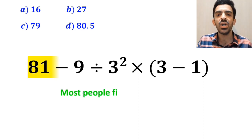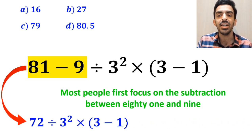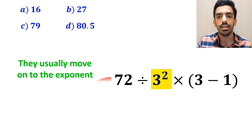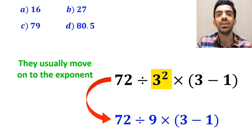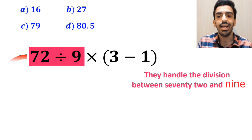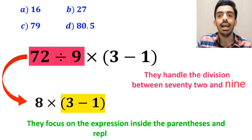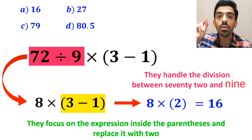To solve this problem, most people first focus on the subtraction between 81 and 9 and rewrite the whole expression as 72 divided by 3 squared multiplied by (3 minus 1). In the next step, they move on to the exponent and simplify to 72 divided by 9 multiplied by (3 minus 1). Then they handle the division between 72 and 9, replacing the expression with 8 multiplied by (3 minus 1). Finally, they focus on the expression inside the parenthesis, replacing it with 2, so the expression becomes 8 multiplied by 2, which equals 16.